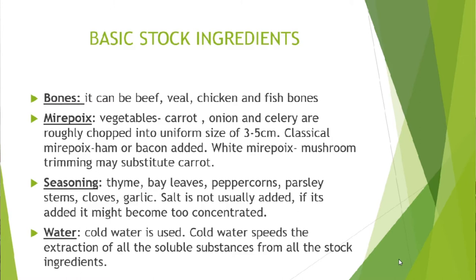Ingredient number three is the seasoning, which can include thyme, bay leaves, peppercorns, parsley stems, cloves and garlic. Salt is not usually added because it might make the stock too concentrated. Ingredient number four is water — we use cold water when preparing the stock because cold water speeds the extraction of all soluble substances from the stock ingredients.